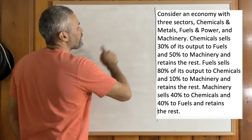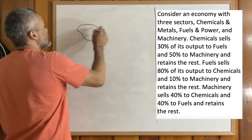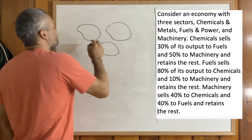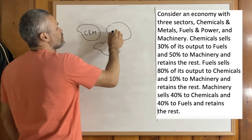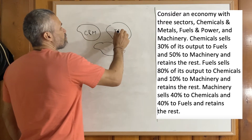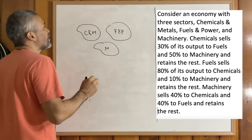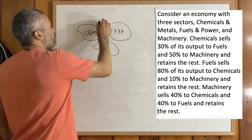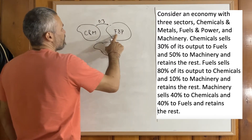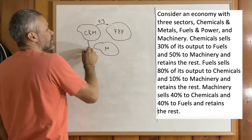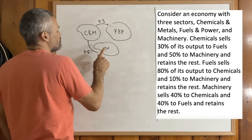Let's find the equilibrium prices for this economy. We have three sectors: sector number one is chemicals and metals, sector number two is fuels and power, and sector number three is machinery. We know that 30% of the output produced by the chemicals sector is used by fuels, and 50% of the output of chemicals is used by machinery.